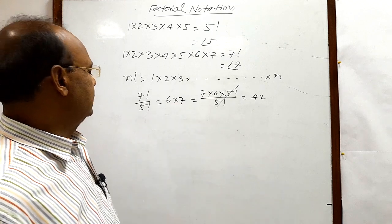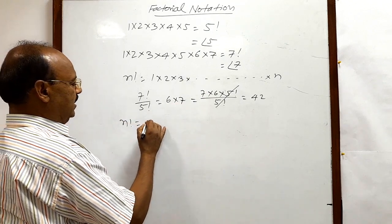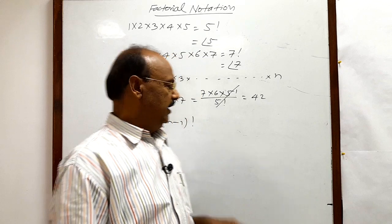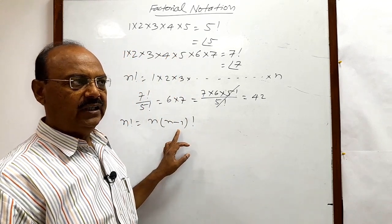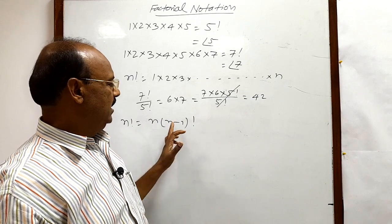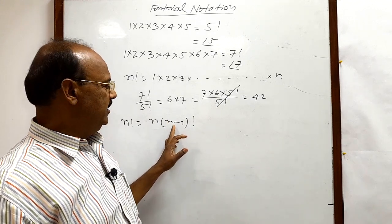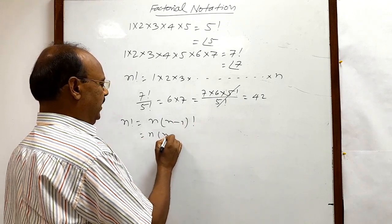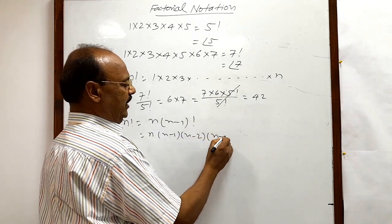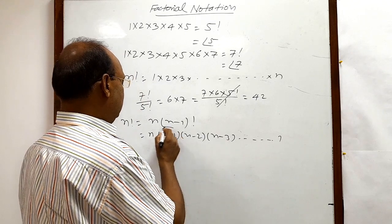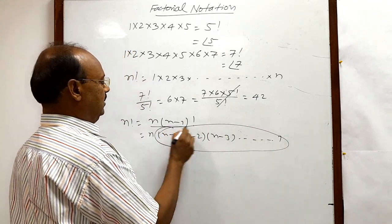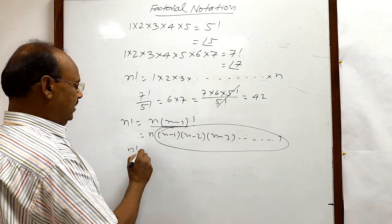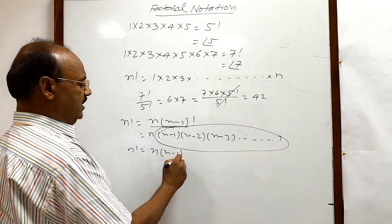It is very interesting to understand that n! can be written as n × (n−1)!. How? Because (n−1)! contains the product of all the first n−1 numbers. When we expand it, n! = n × (n−1) × (n−2) × ... × 1, and up to the second step we write (n−1)!. So it is very simple to understand that n! = n × (n−1)!.